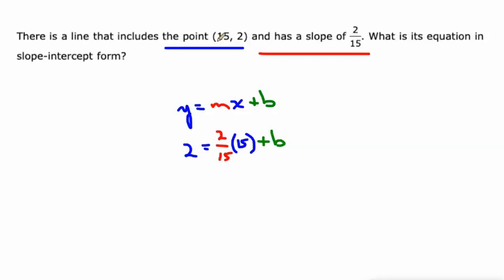Here's how we do that. It's the same steps pretty much every time. Multiply the slope times the x value that's given to us. 2/15 of 15 is just 2. And then subtract 2 from both sides.